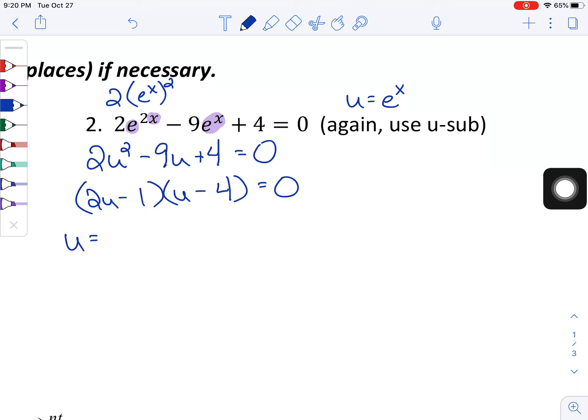So this gives me u is equal to 1 half and u is equal to 4. But I'm going to back substitute what we originally started the problem with, which is really e to the x. So e to the x is equal to 1 half and e to the x is equal to 4, which turns into x is equal to the natural log of 1 half and x is equal to the natural log of 4.